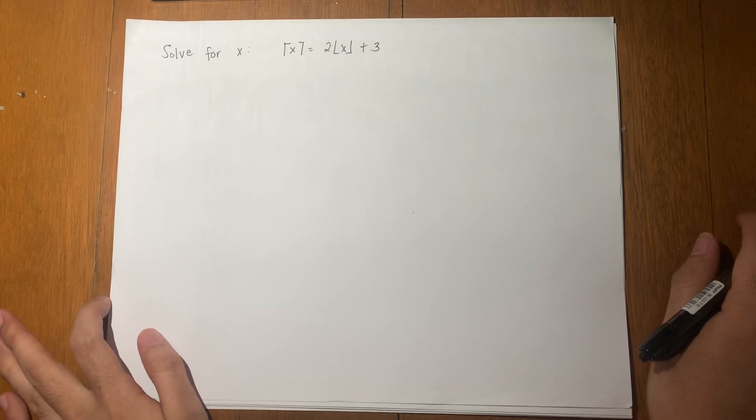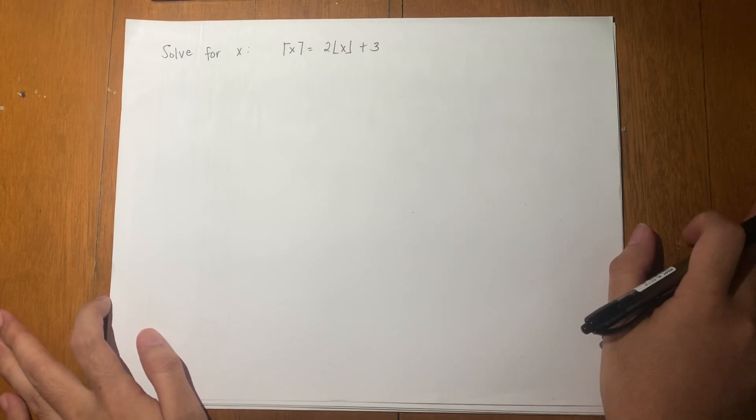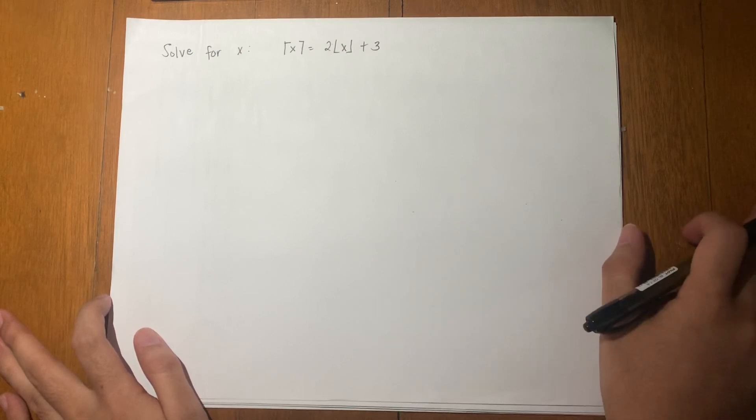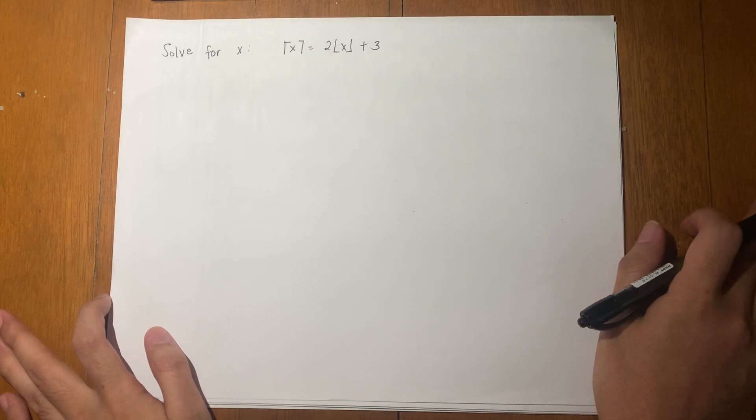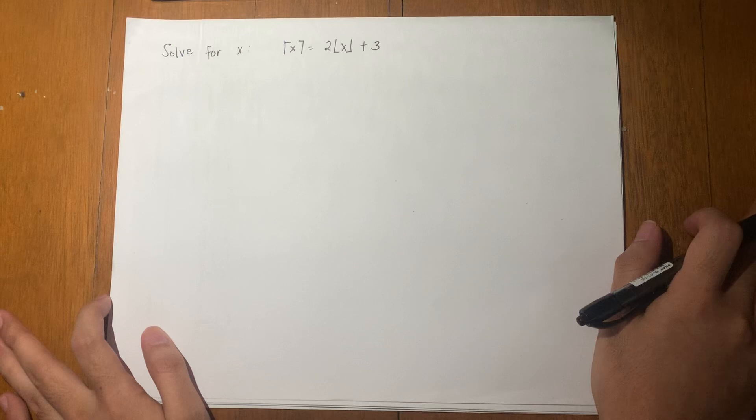In general, when solving equations involving ceiling or floor functions, you always have to start by assuming that the variable is an integer. Why is that so? Because that makes the solution simpler.